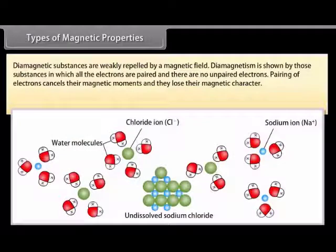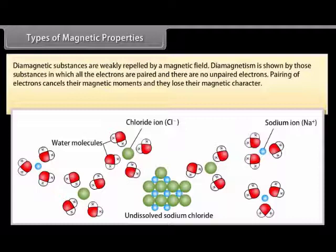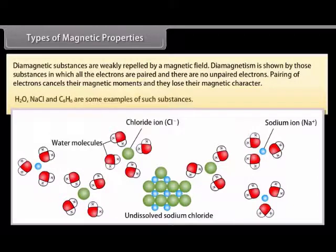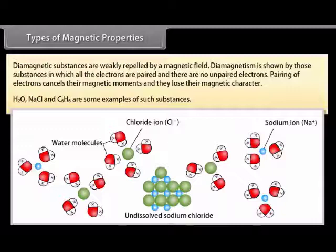Diamagnetic substances are weakly repelled by a magnetic field. Diamagnetism is shown by those substances in which all the electrons are paired and there are no unpaired electrons. Pairing of electrons cancels their magnetic moments and they lose their magnetic character. H₂O, NaCl and C₆H₆ are some examples of such substances.